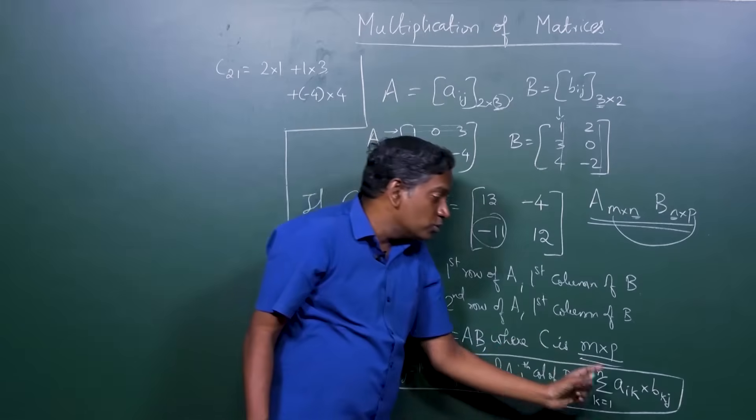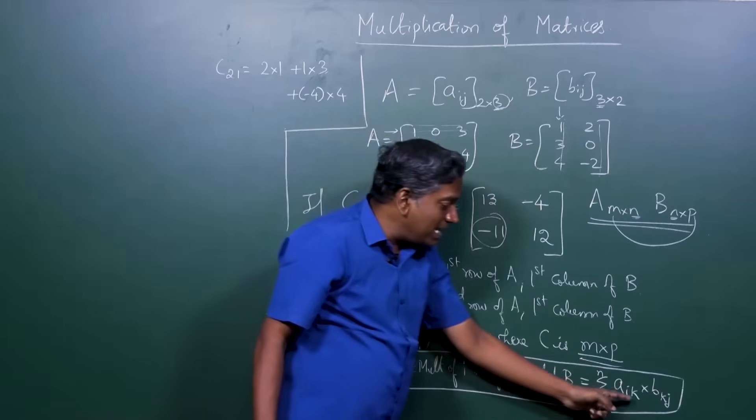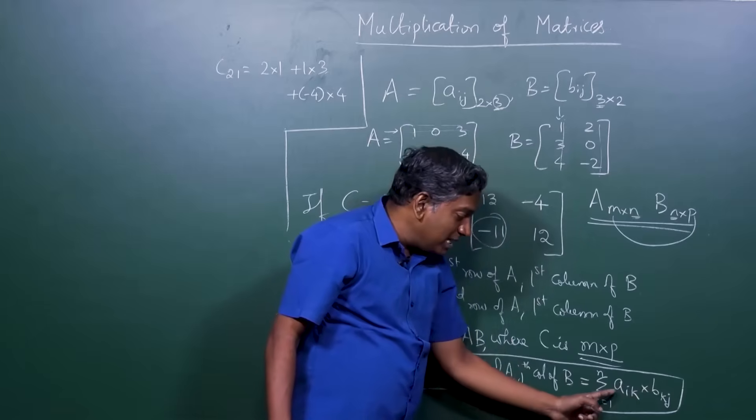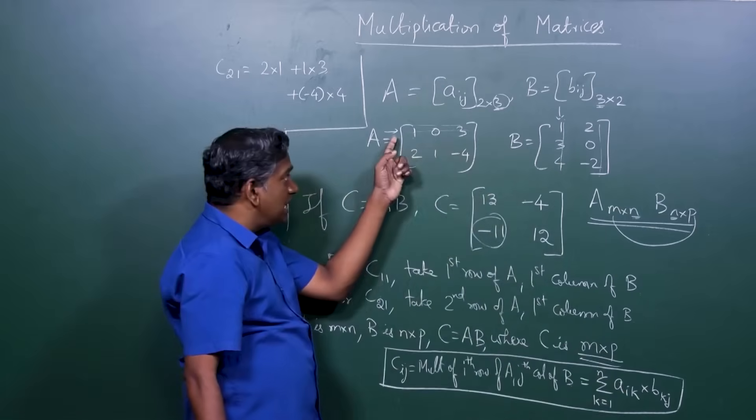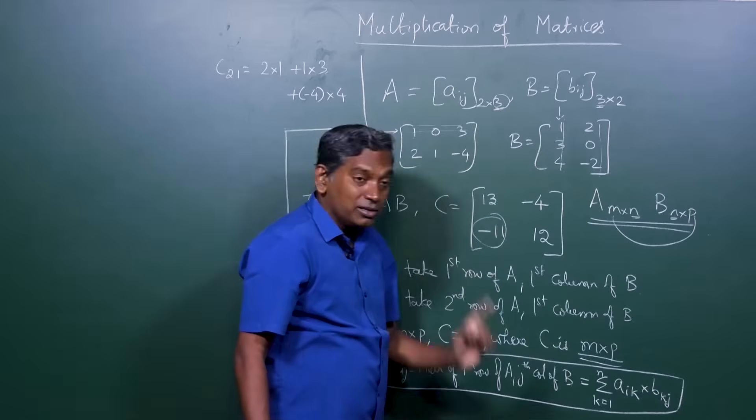What are those n products? Those products are what are given by Aik, Bkj. K is varying. So which means what? You take the i-th row and go through all the columns. That's exactly what we have done. Here, if you take the second row, we went through all the columns.